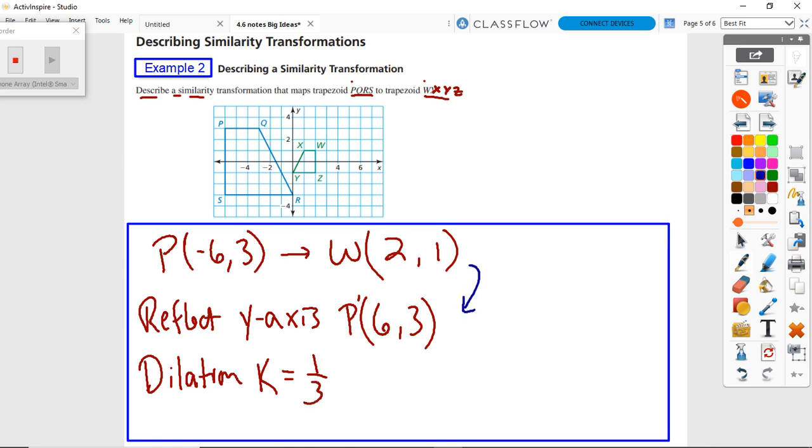So that would take me from six, three to two, one, so it shrunk. From there to there. Reflection at Y axis. You can kind of look, if they give you a graph it's real nice and they usually will, so we can see here the orientation of this thing has to flip before it shrinks.